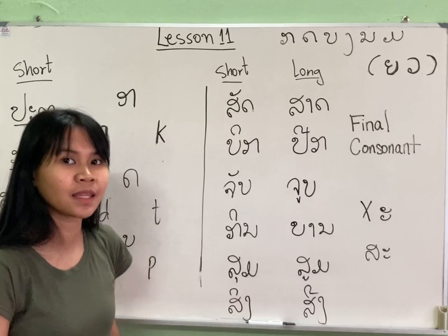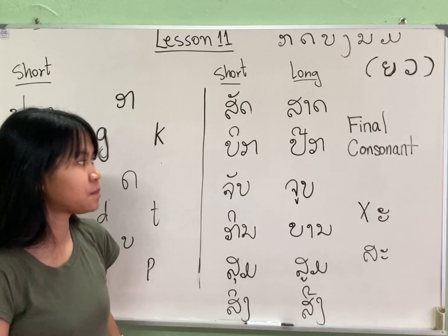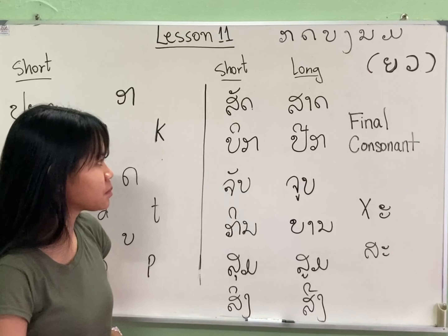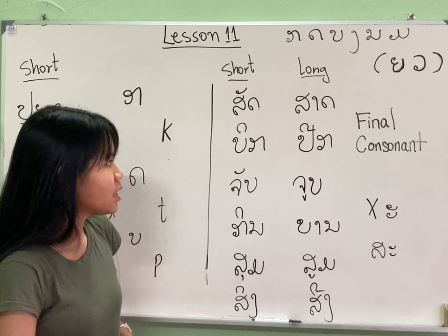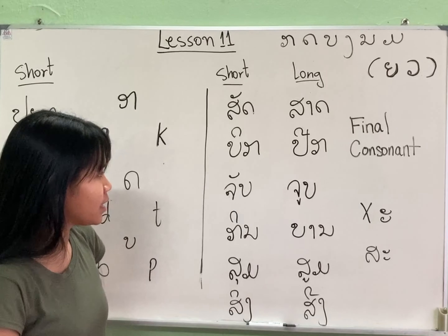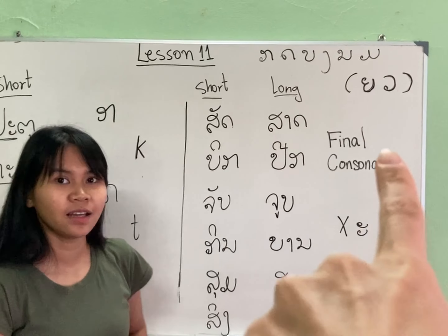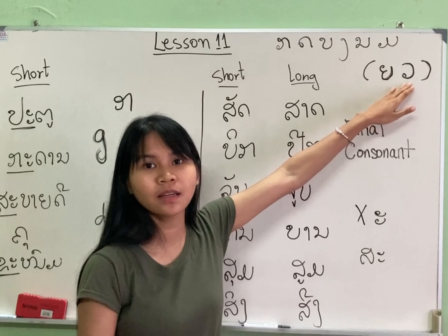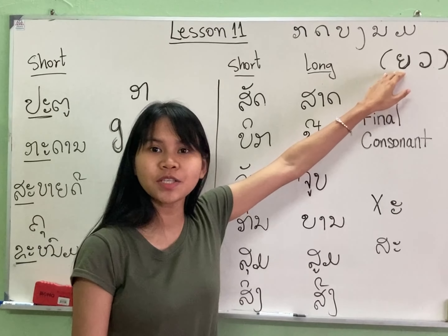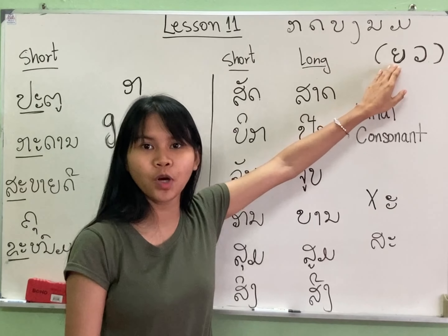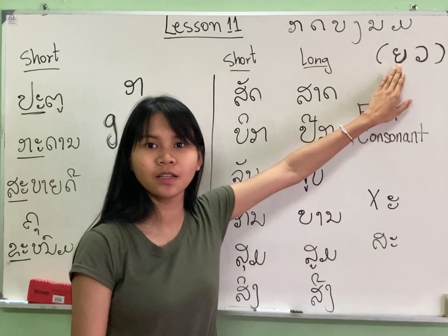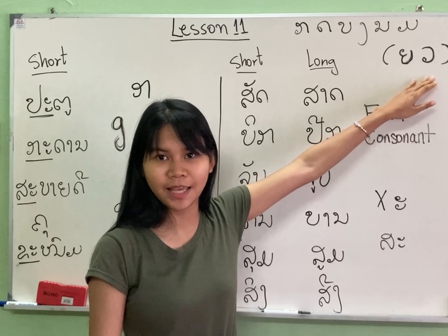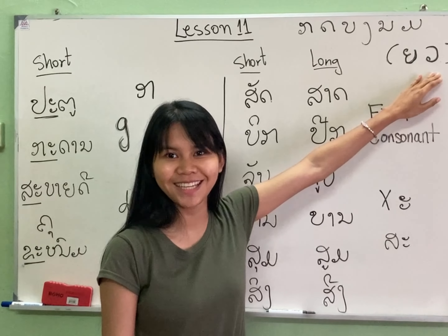What about 'nyong' and 'hua' endings? Those are vowel combinations - you're going to learn about those later.